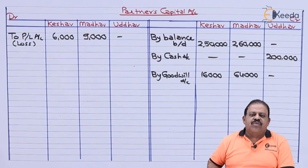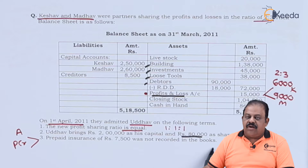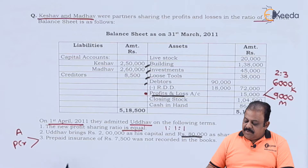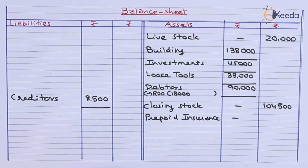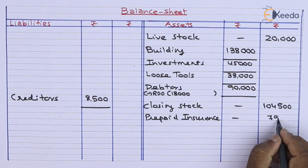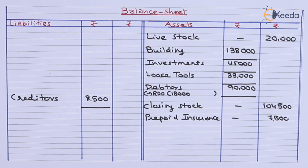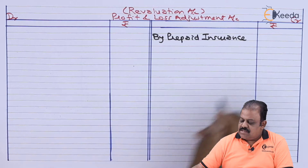There is prepaid insurance of 7,500 not recorded in the books. This will be recorded first on the asset side as prepaid insurance of 7,500. The second effect is a credit to the profit and loss adjustment account by 7,500.